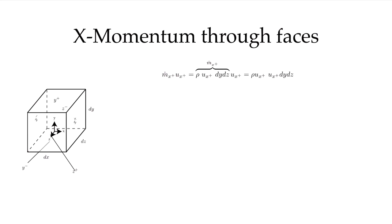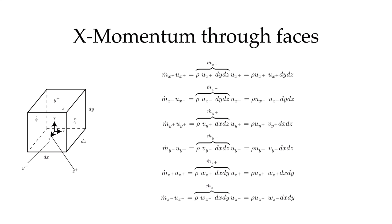Let's look at those terms in more detail. At the x-plus face in three dimensions, we can go through all six faces and write an equation evaluating the mass flow rate. For the x-minus face, it's the same — mass flow rate times the u-component gives x-momentum. On the y-faces, we need the perpendicular component of velocity to evaluate mass flow rate, but still need the u-component for x-momentum. On the z-plus face, we need the w-component to evaluate mass flow through that face, but still multiply by u-component to get the x-momentum carried out.